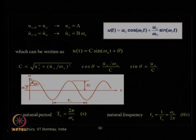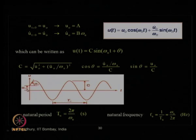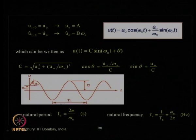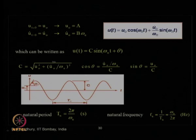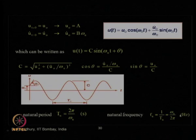From the initial conditions, we can get the constants A and B and the complete solution. The behavior — u(t) versus time — shows the initial displacement at t = 0, and the slope at the starting gives the initial velocity. The amplitude of motion C can be obtained accordingly, the natural frequency fₙ = ωₙ / (2π) in hertz, and the natural period Tₙ = 2π / ωₙ in seconds.